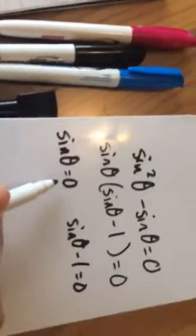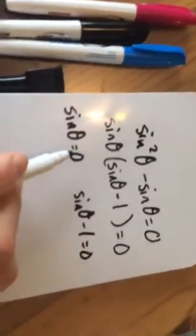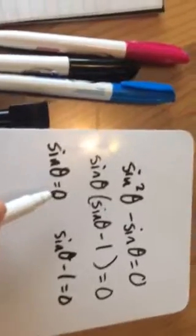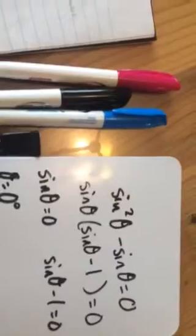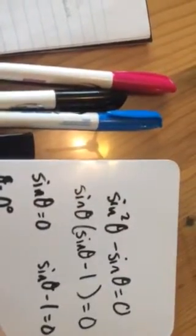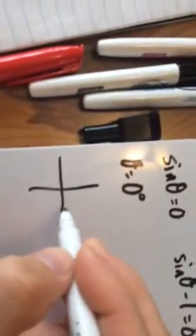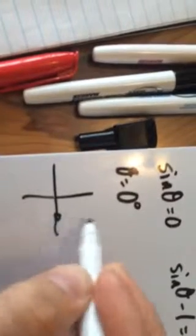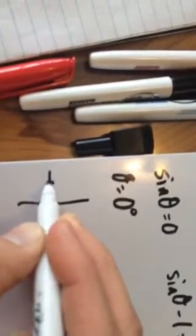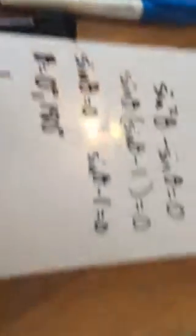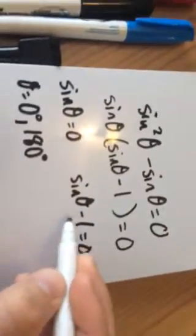Sine theta equals 0. There are two spots for that. So theta will equal 0 degrees, because remember, sine is going to be 0 degrees right here, because sine is your y value, your up or down. So right there, and also over here on this axis, which is the same thing as 180 degrees. So there's two answers for that.